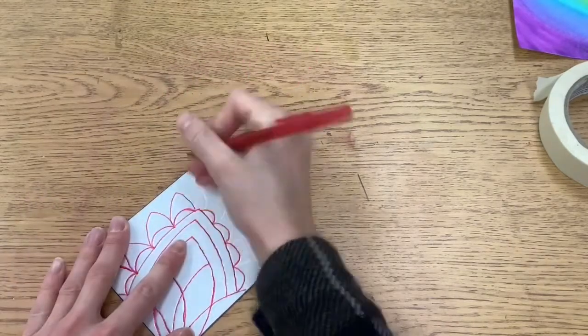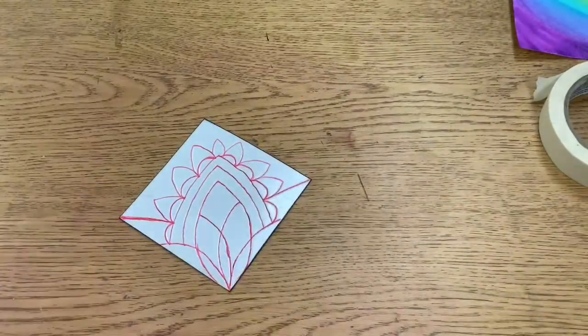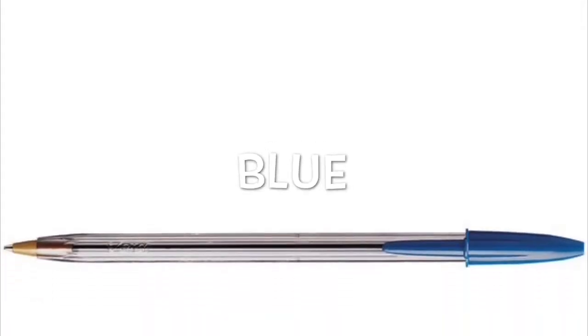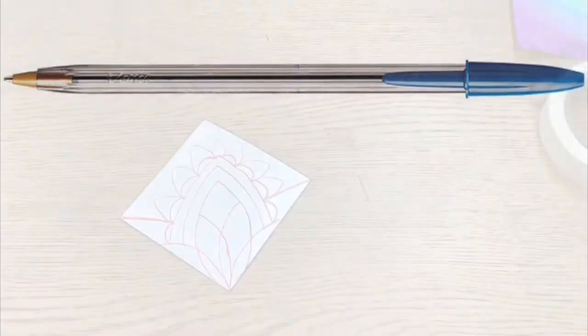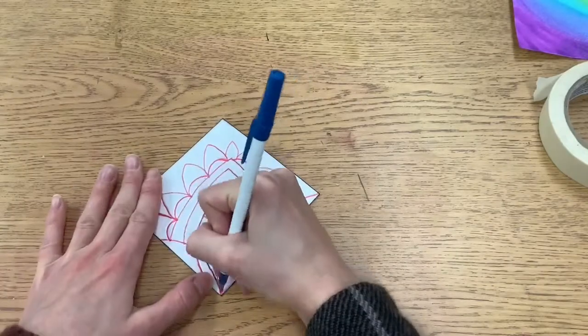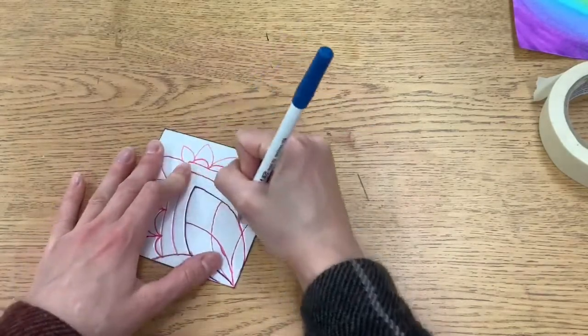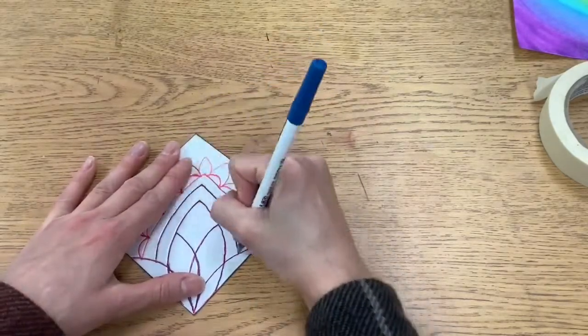After I use the red pen to make sure all of those lines are very nice and deep in the printing plate, I'm going to go over them a second time in blue. This is because if those lines aren't deep enough, then when we print it, it won't work.